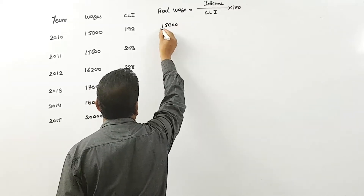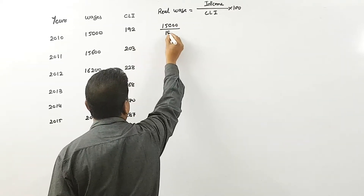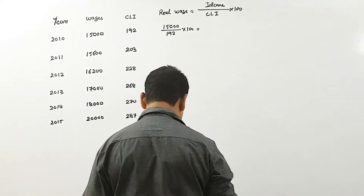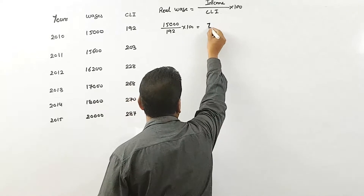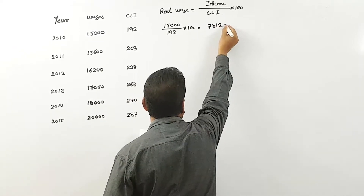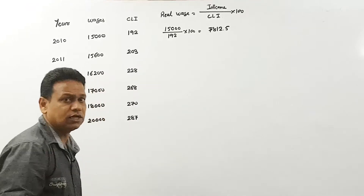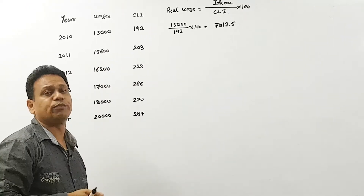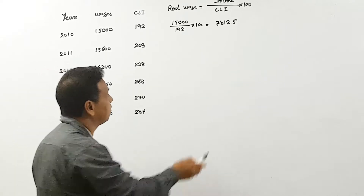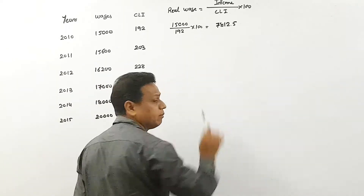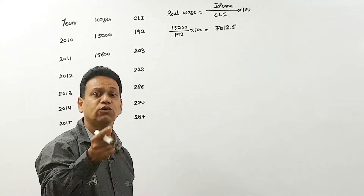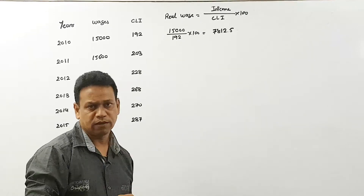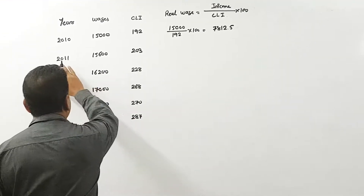Here in this example: for the year 2010, wages are 15,000 divided by the cost of living index number 192, into 100. Using a calculator, the answer is 7,812.5. So you earn 15,000 rupees, but the real purchasing value of that amount is only 7,812.5 — this is the real basis according to the inflation rate, calculated using the cost of living index number.